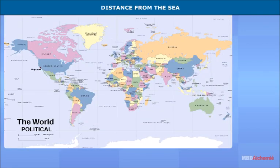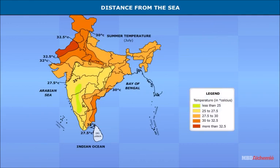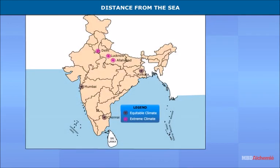Equitable climate has very little difference in the temperature of day and night — summers are not hot and winters are mild. For example: Kolkata, Mumbai, and Chennai. In extreme climate, summers are hot and winters are cold, with a large difference between the temperature of day and night.